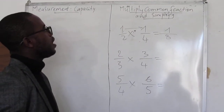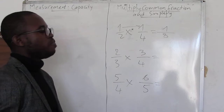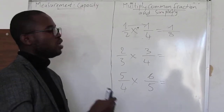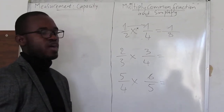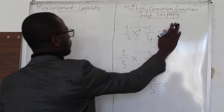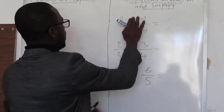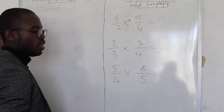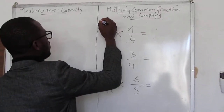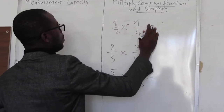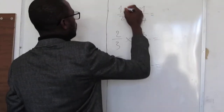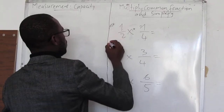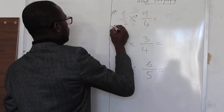We are doing multiplying common fractions and simplifying — to show how to multiply a common fraction and the way to simplify. We have one half times one quarter. We're going to use the first method and the second method.